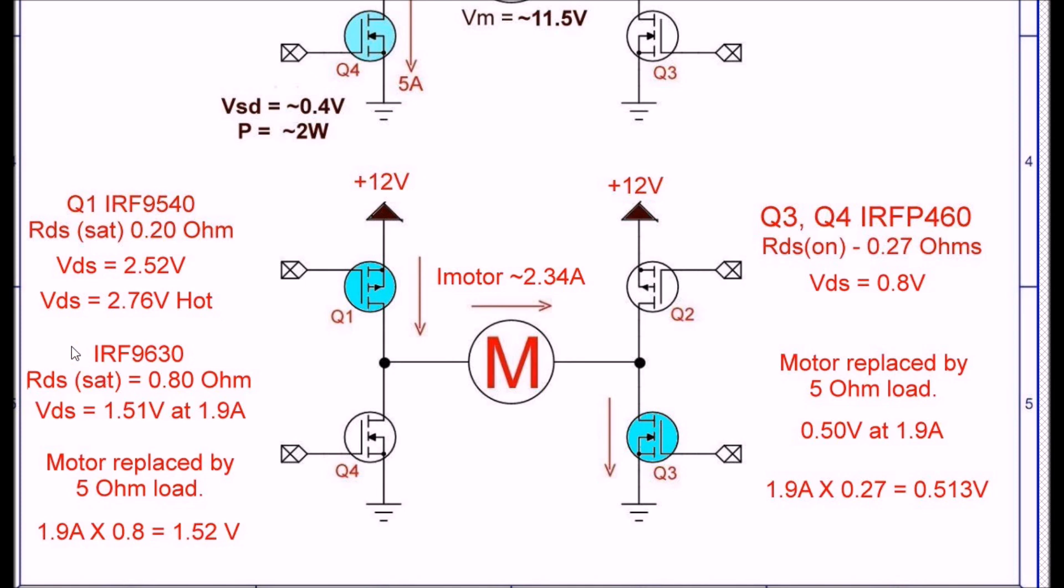So I took Q1 out and went on the test and reinserted the IRF9630 with the 0.8 ohm resistance. This time with the motor removed I was running at 1.9 amps. So 1.9 amps times 0.8 ohms. Bingo. The voltage across the drain and the source calculated out almost exactly. The actual measured voltage was 1.51 volts. The calculated voltage was 1.52. That's great. It worked exactly what it was supposed to do, but it was still getting hot even at 1.9 amps.